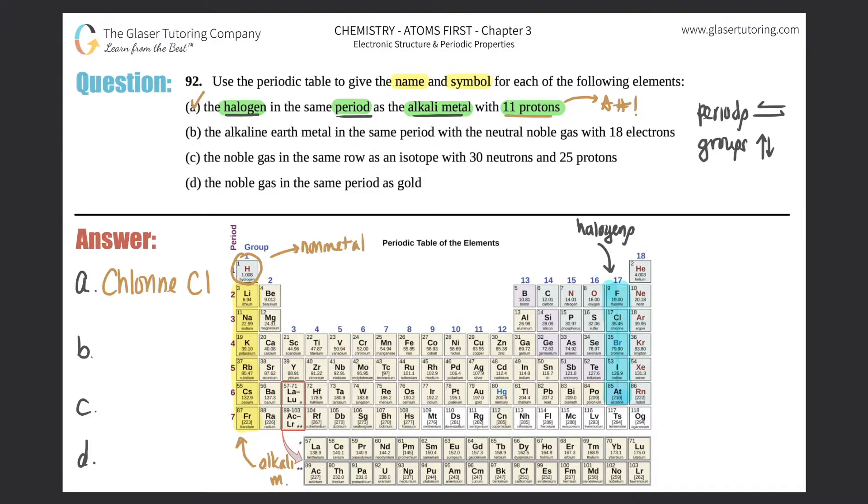Part b asks: What is the alkaline earth metal in the same period, going from left to right, with the neutral noble gas with 18 electrons? Here are two more groups they're talking about. Where are the alkaline earth metals, and what noble gas has 18 electrons?